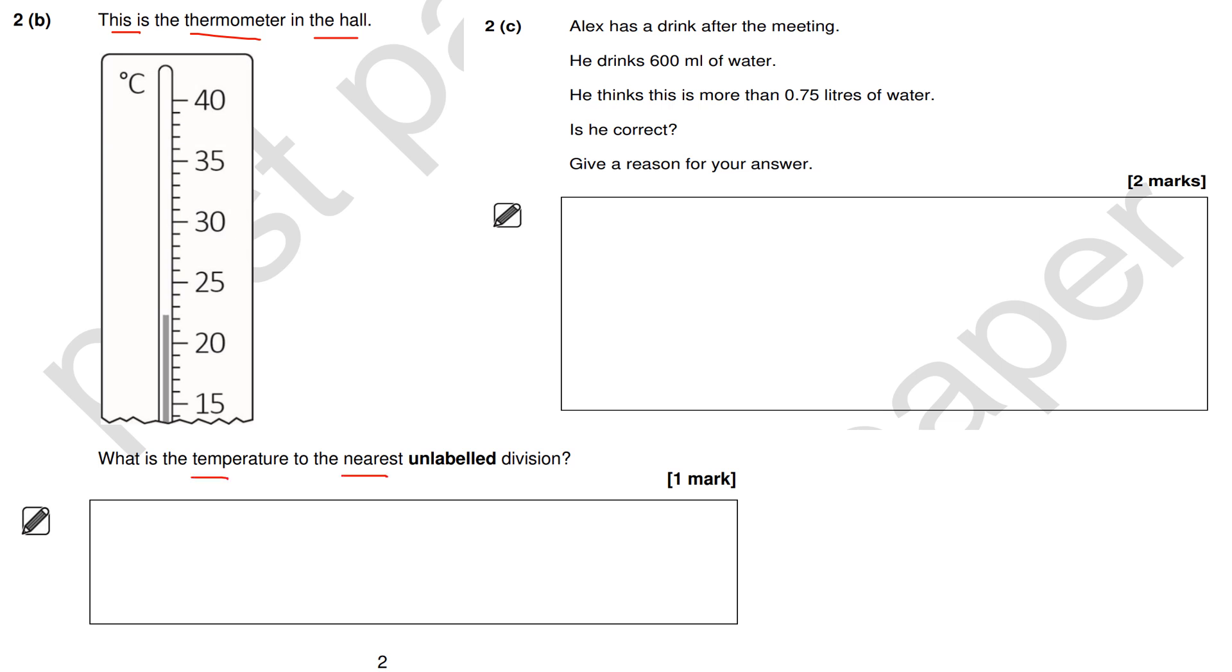What is the temperature to the nearest unlabeled division? Look: 21, 22, 23. So it's roughly 23 degrees Celsius. This topic is reading scales.